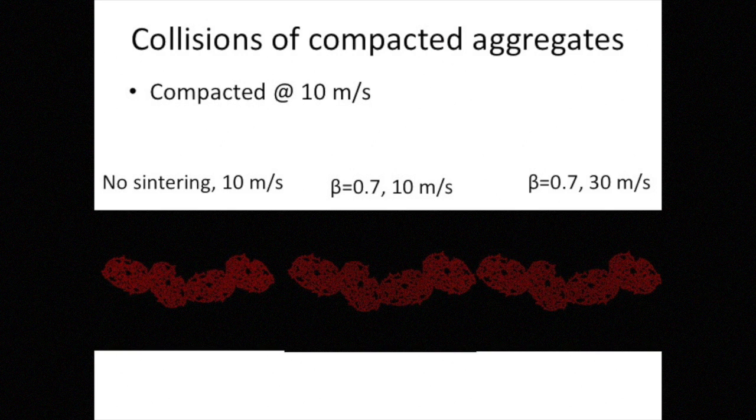If no sintering, the collision outcome is perfect sticking, even if the aggregate has compacted structure. But in sintered cases, the collision outcome is simply bouncing because the aggregate is so hard. And in high velocity case, you can see many fragments are produced around the impact point.